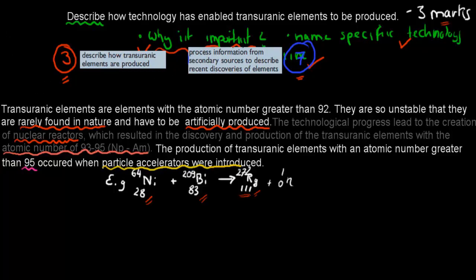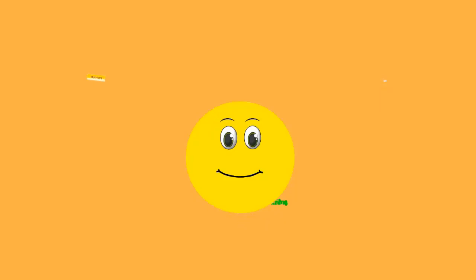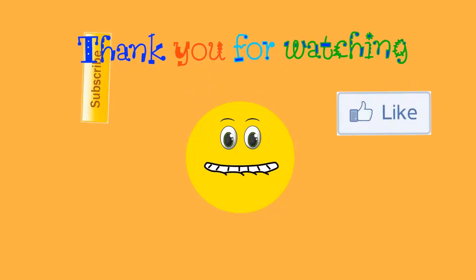But yeah, if you mentioned, so we mentioned here that they need to be artificially produced. That's a point. Then we mentioned examples, such as the nuclear reactor, and said that that's important when it comes to producing, once we have an atomic number of 93 to 95. That's a point as well. And then we gave another example of technology, which is the particle accelerator, and said that anything greater than 95 needed to have one of those. So that's three out of three. I hope that helped. Thank you for watching.